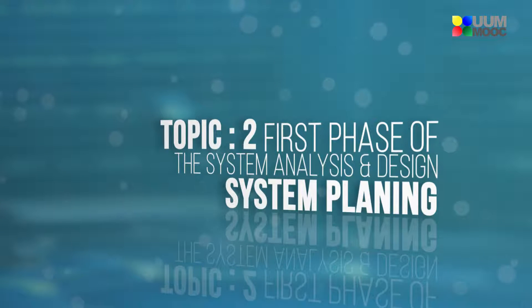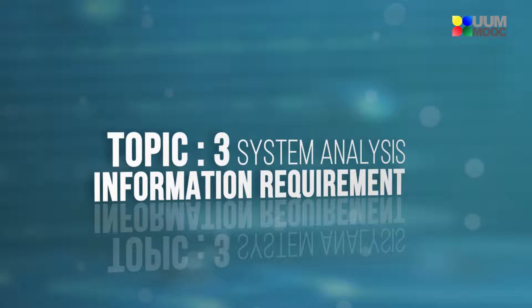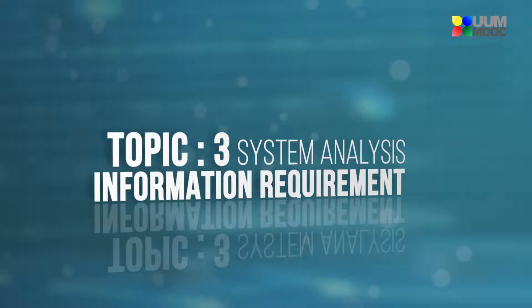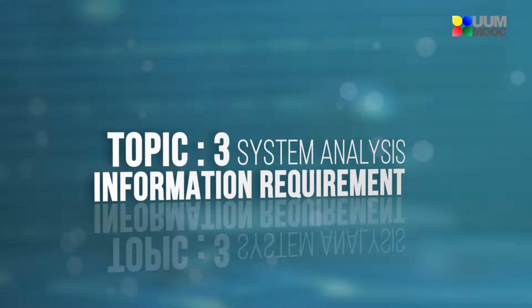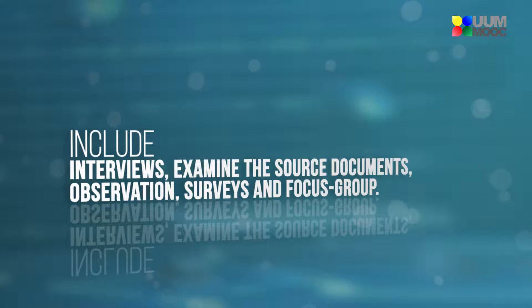Topic 2 will discuss the first phase of the system development process, namely system planning. Topic 3 will demonstrate the process in the analysis phase, where the project team determines user requirements using various methods of fact-finding, including interviews, examining source documents, observation, surveys, and focus groups.